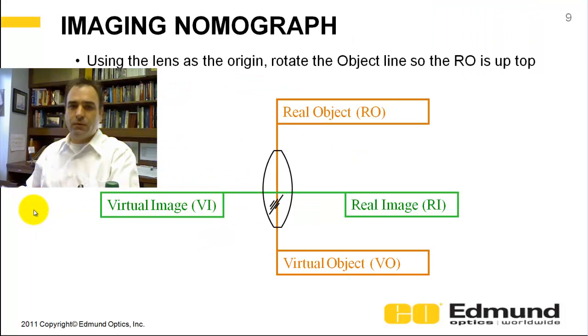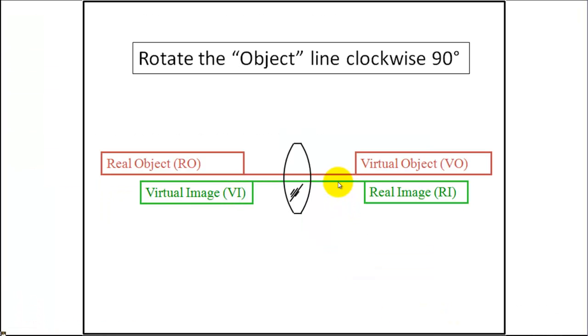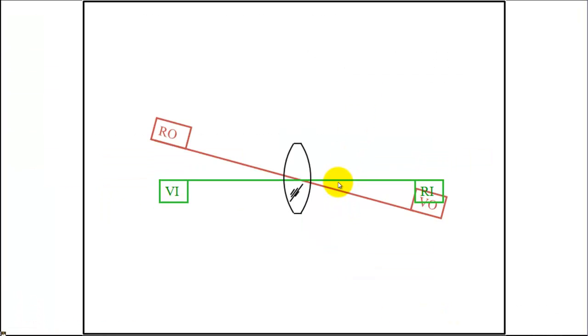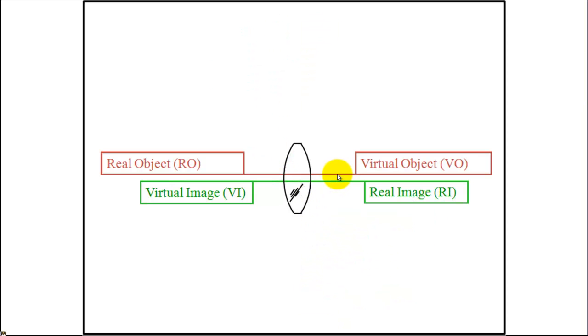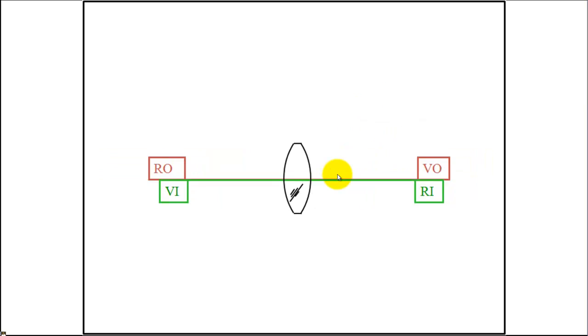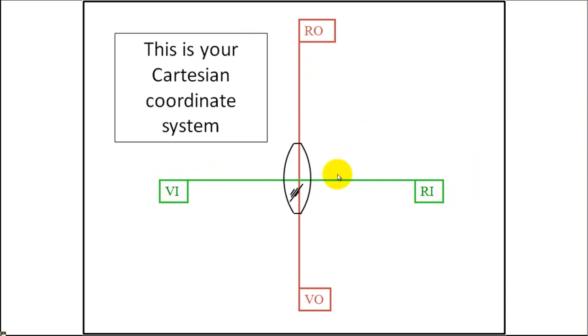So what are we going to do? Very simple. We're going to take these two optical axes. We're going to take the object axes, and we're going to rotate it clockwise 90 degrees. Real object on top, virtual object on bottom. This creates a Cartesian coordinate system. There's an animated GIF, very simple, that's showing what is happening. We're just taking these two axes that in reality lie on top of each other and we're rotating the object axis.